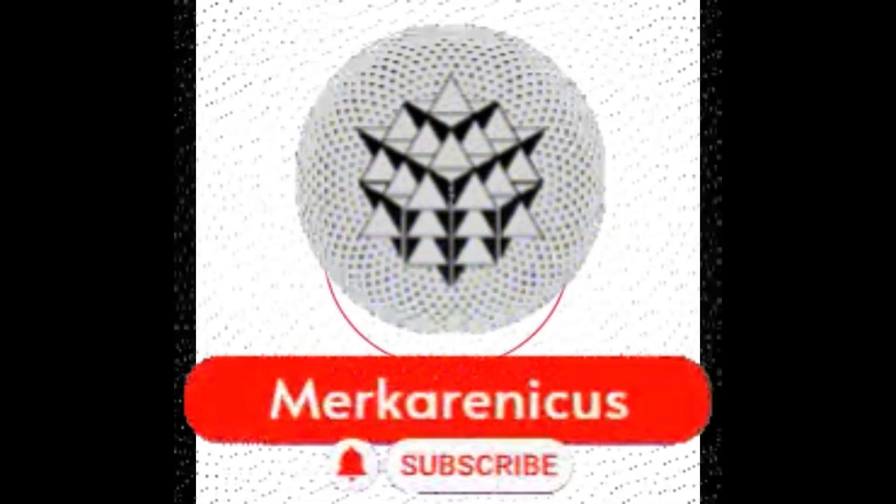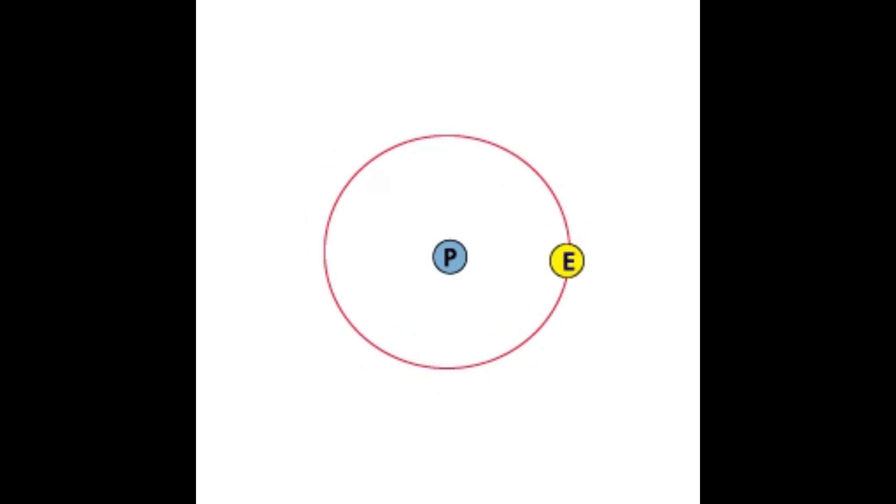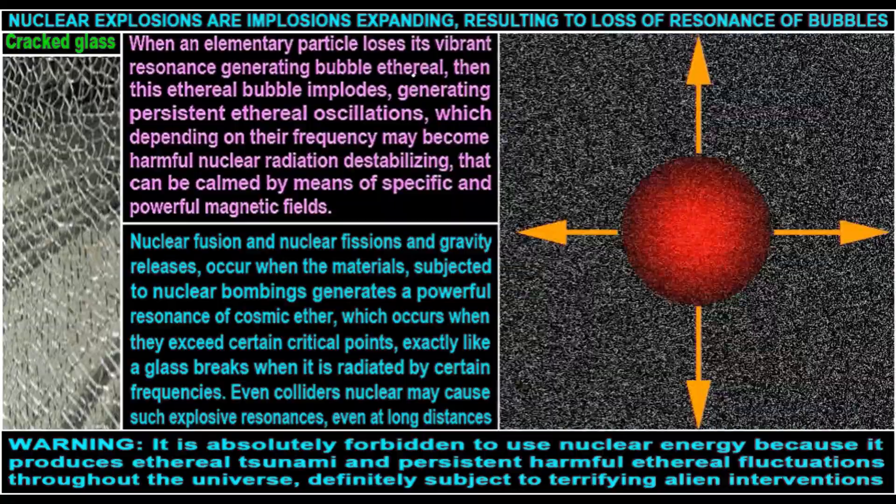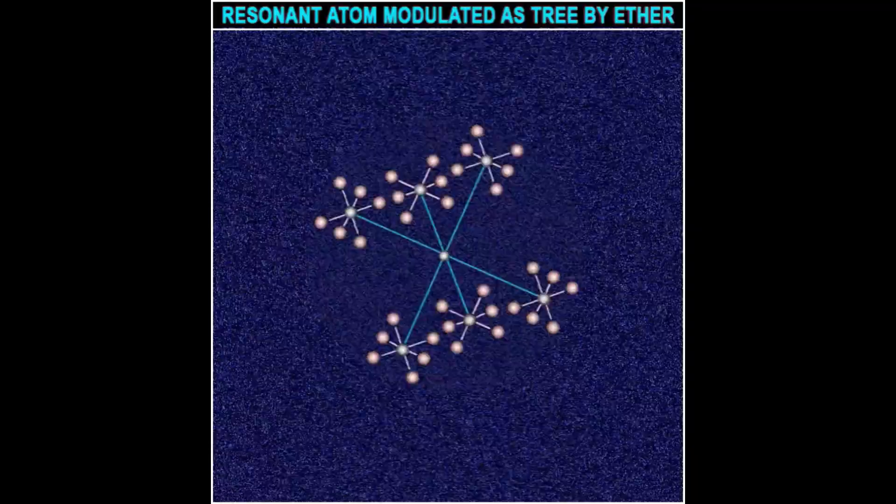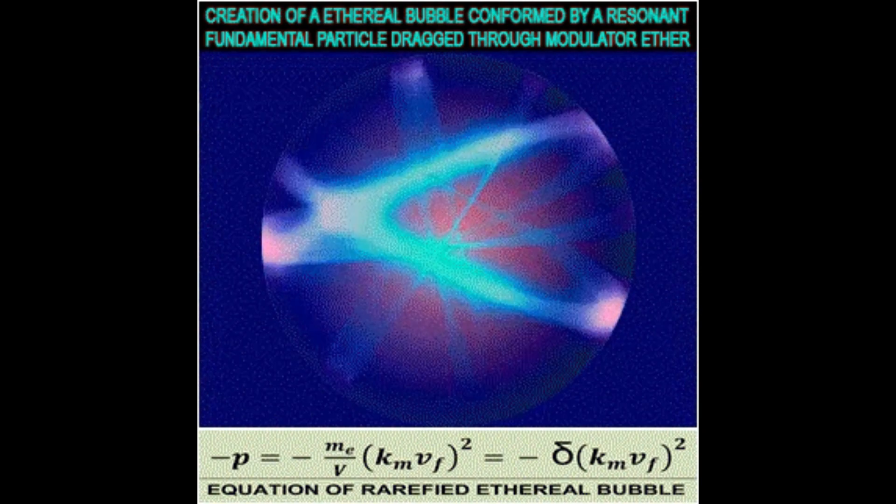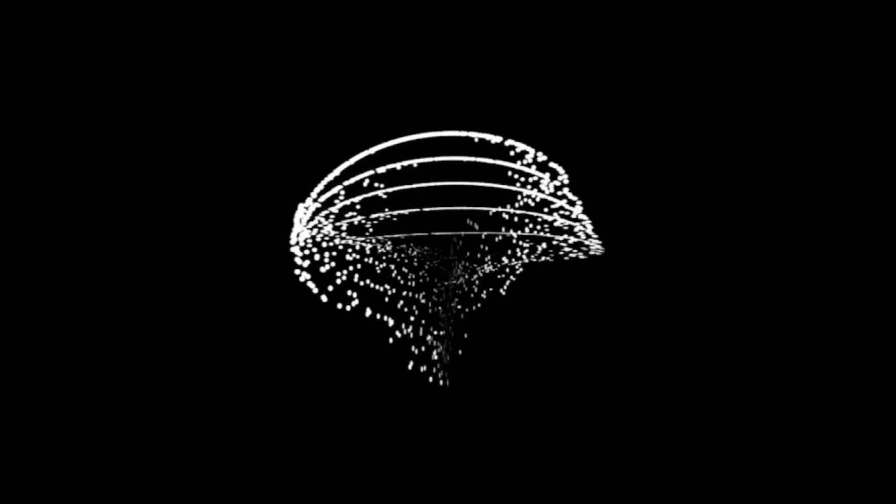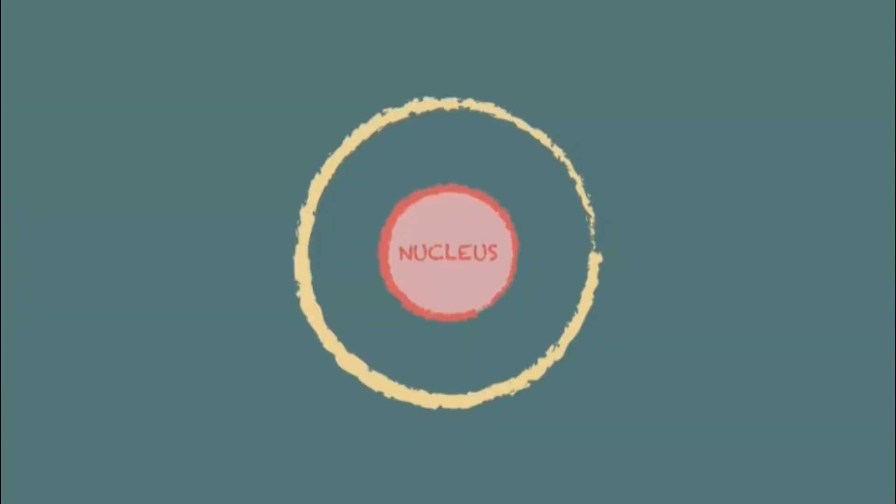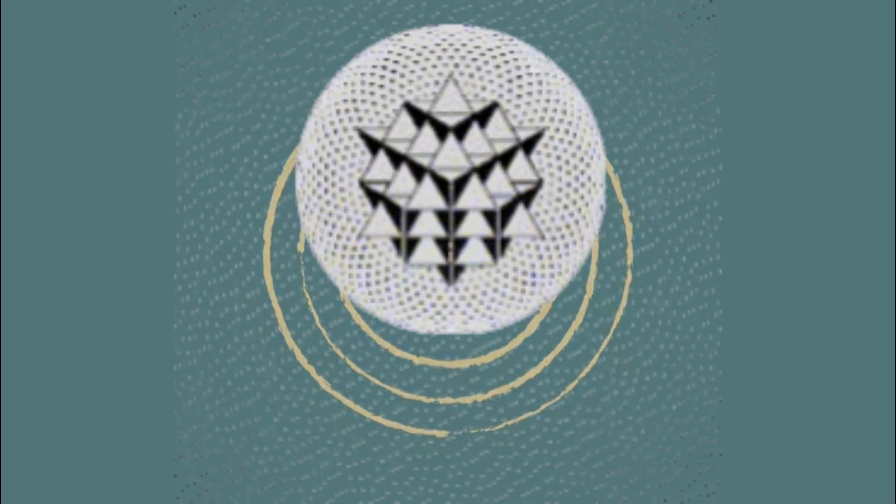The researchers at Fermi National Accelerator Laboratory, also known as Fermi Lab, are making considerable progress in their investigation of the fifth force of nature. According to researchers in the vicinity of Chicago, they may be on the brink of uncovering a new force of nature. Further evidence has emerged indicating that muons, subatomic particles, are not conforming to the predicted behavior outlined in the existing theory of subatomic physics.